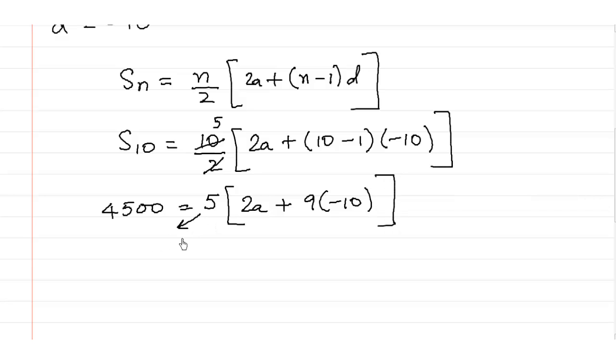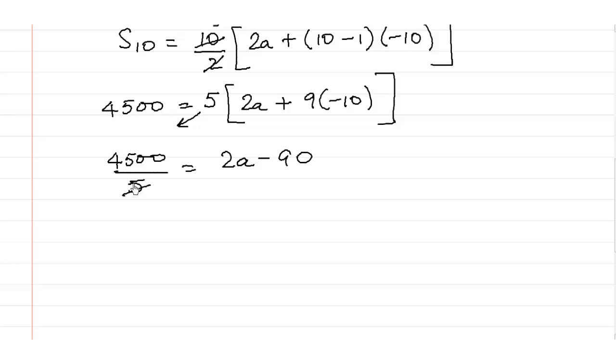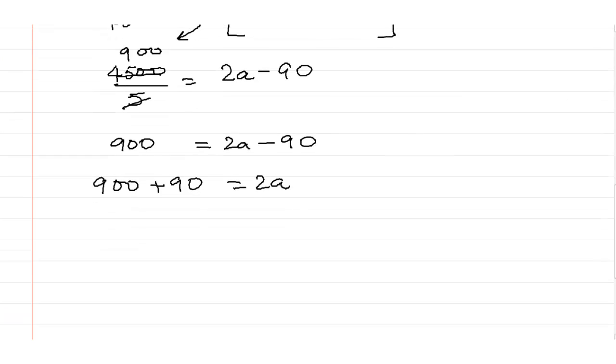We will divide this 5 on the left hand side. So 4,500 upon 5 is equal to 2A plus 9 times minus 10. So 900 is equal to 2A minus 90. So 900 plus 90 is equal to 2A. So 2A is 990.